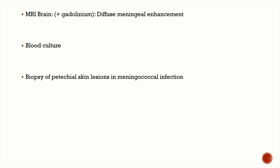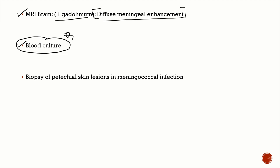MRI brain with gadolinium contrast shows diffuse meningeal enhancement, but this is not specific — it can also be seen in chemical, hypersensitivity, or carcinomatous meningitis. Before starting antibiotics, always take blood cultures. In meningococcal infection with petechial rash, a biopsy of the petechial skin lesion can also be taken.